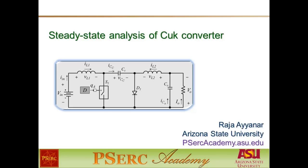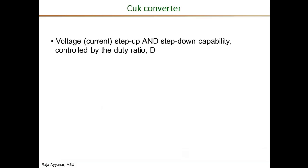The Ćuk converter is capable of both stepping up and stepping down the voltage, and therefore the current, meaning the output voltage can be either higher or lower than the input voltage depending on the application and the operating condition. This is controlled by controlling the duty ratio of the single switch in the Ćuk converter.